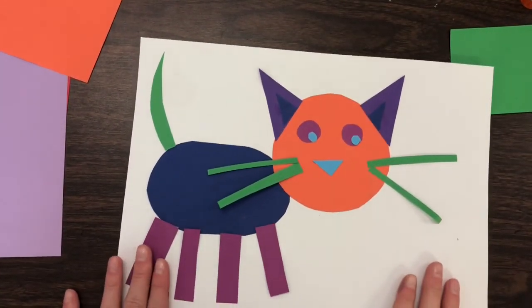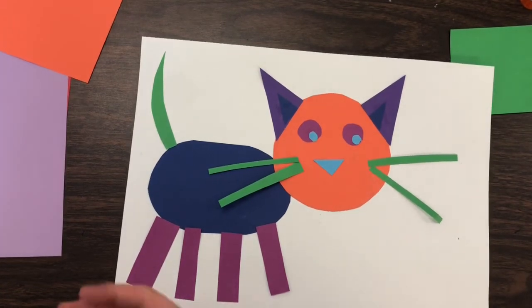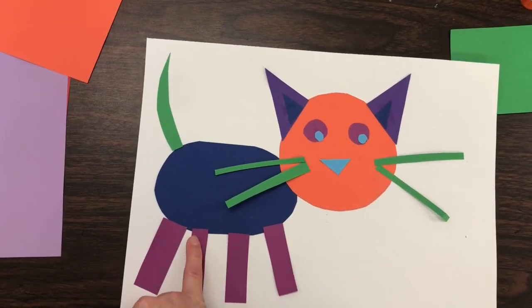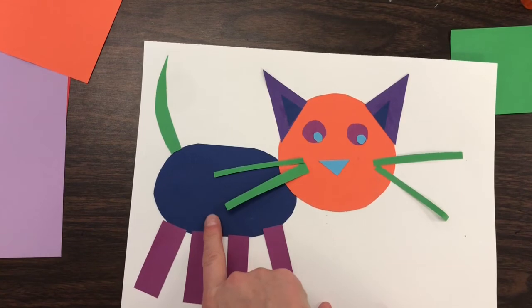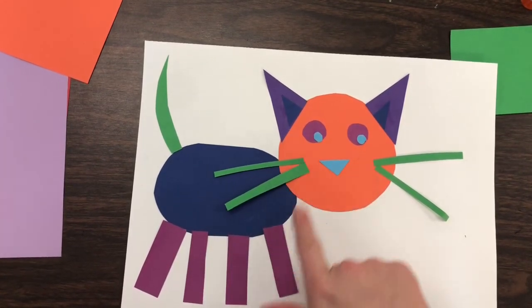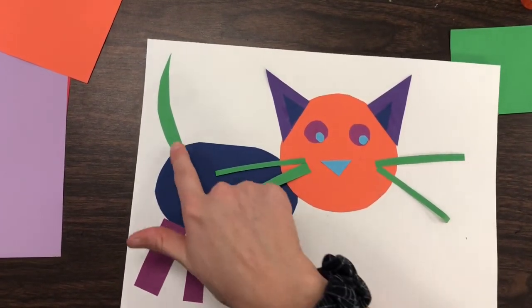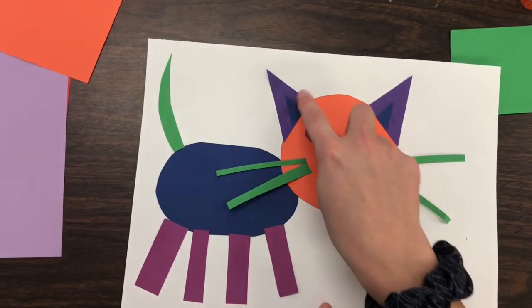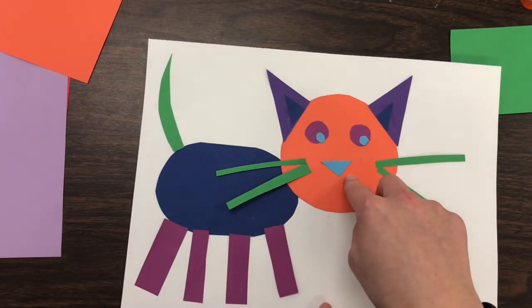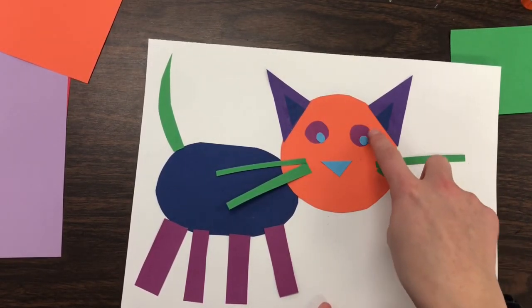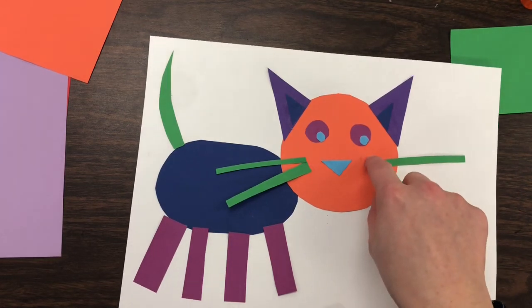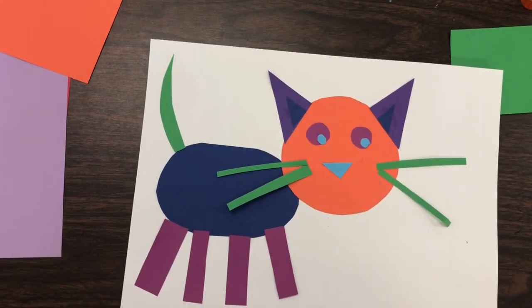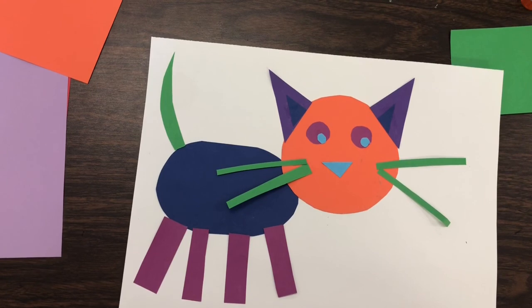All right. So here is my completed collage of a cat. I did decide to add the body and the legs. So I made the body with an oval, rectangles for the whiskers and legs, a crescent for the tail, triangles for the ears and nose, and then circle for the head, eyes, and pupils. I cannot wait to see what shapes you use and what animal you create in your collage today. Happy creating.